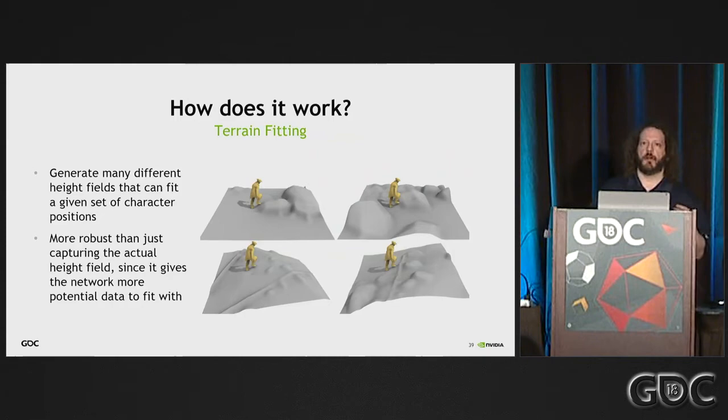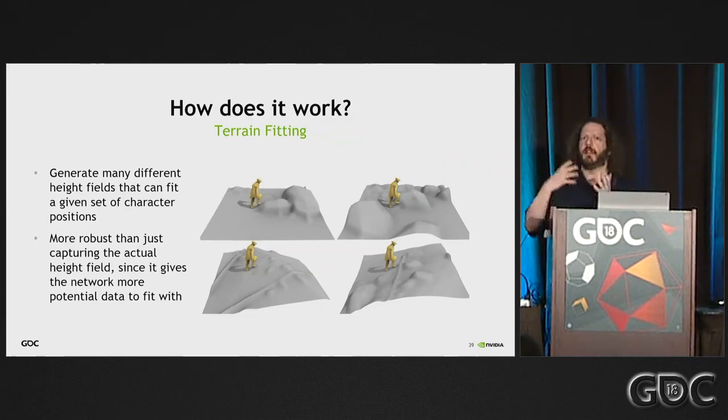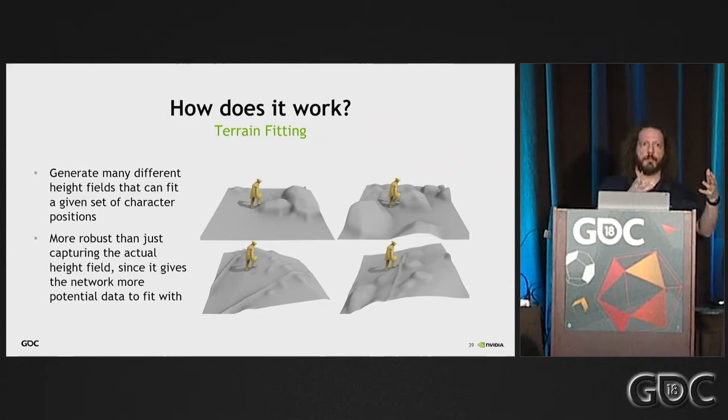Next is terrain fitting. If you capture someone walking up a staircase, you have one set of terrain. But we want to show the network that the character's poses may be far more varied on different terrain. Different terrain patches all require lifting the right foot — this is data augmentation in deep learning. With a little bit of data, if you vary it, you give the network more to learn statistically, and it generalizes better.